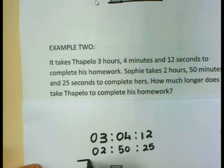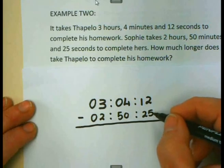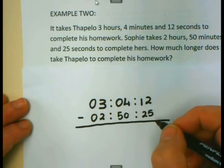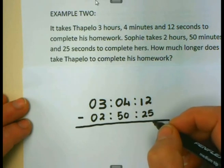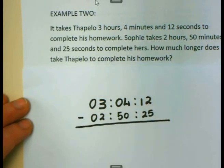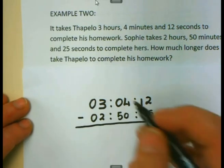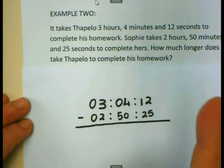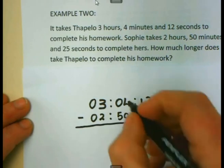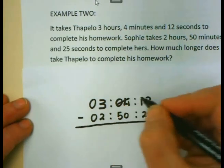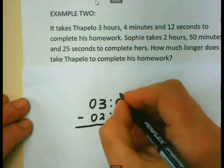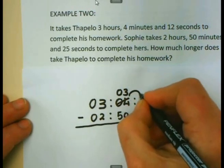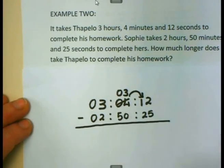If I want to subtract now, I am starting from the right, and I want to subtract 25 from 12, which is not possible because 12 is smaller than 25. So what am I going to do? I am going to move over to the minutes. And I am going to borrow from the minutes 1 whole minute. If I borrow 1 whole minute, the 4 minutes become only 3 minutes.